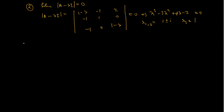And this brings us to the third step. The third step is to find the corresponding eigenvectors of the eigenvalues that we got. Now, I'm going to start with the simple one, which is the real one. We have two complex eigenvalues — you can see they are complex conjugates of each other — and then we also have one real eigenvalue.